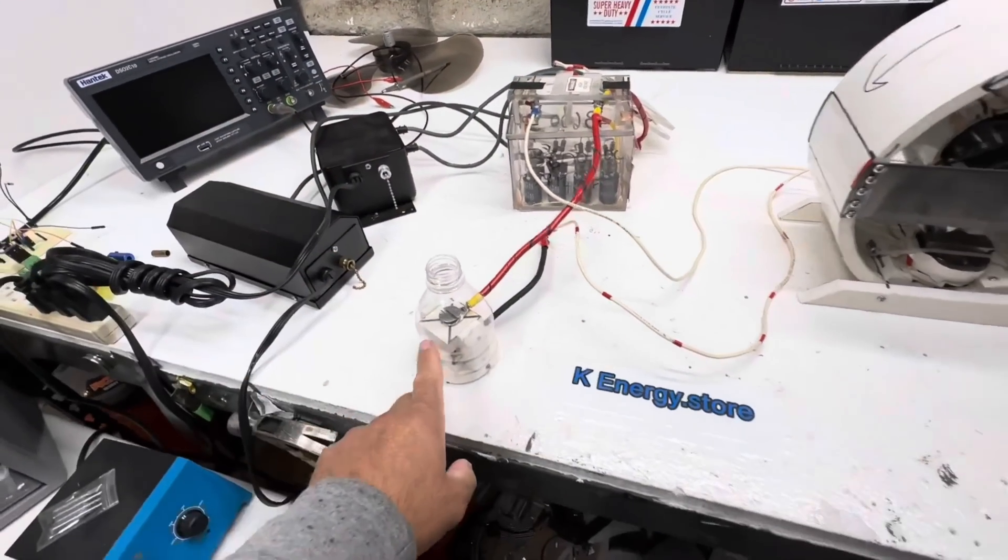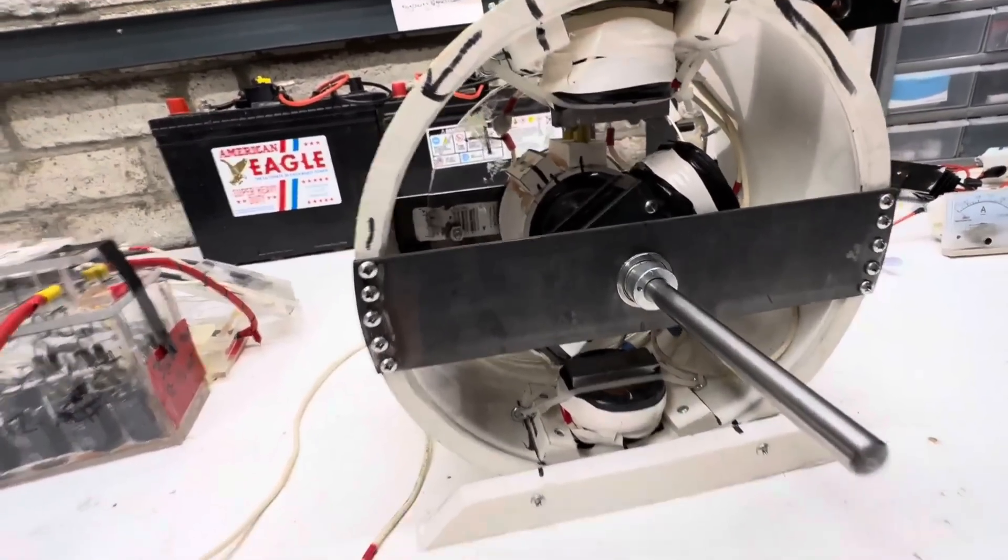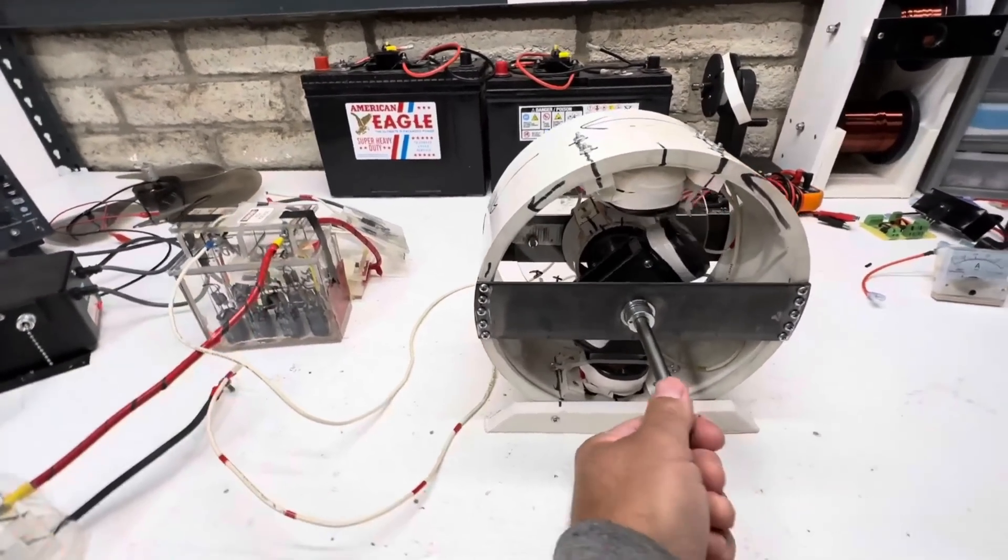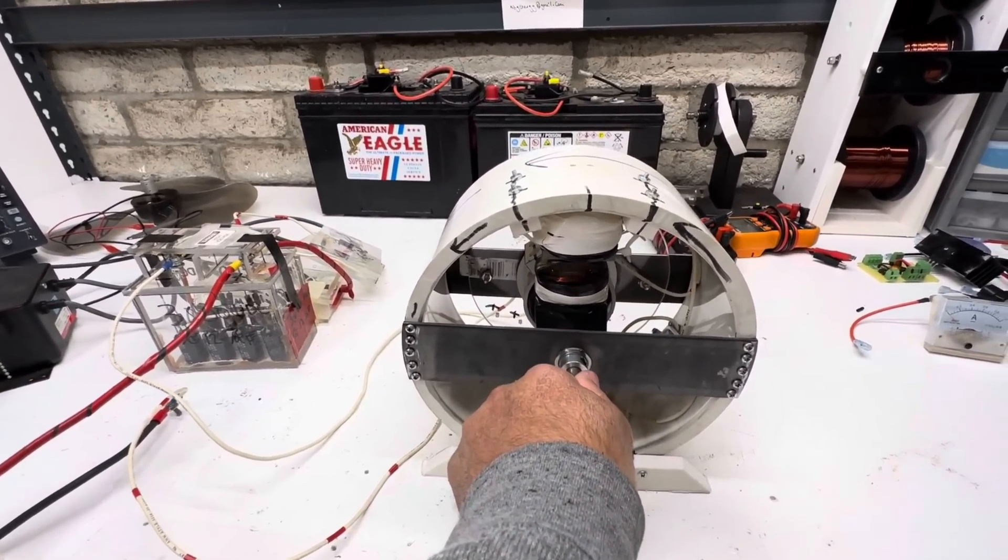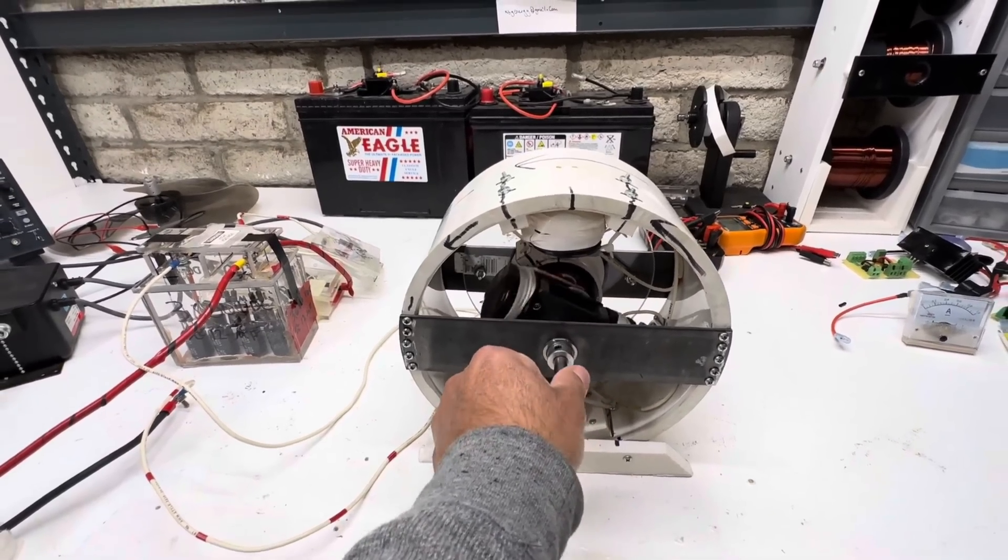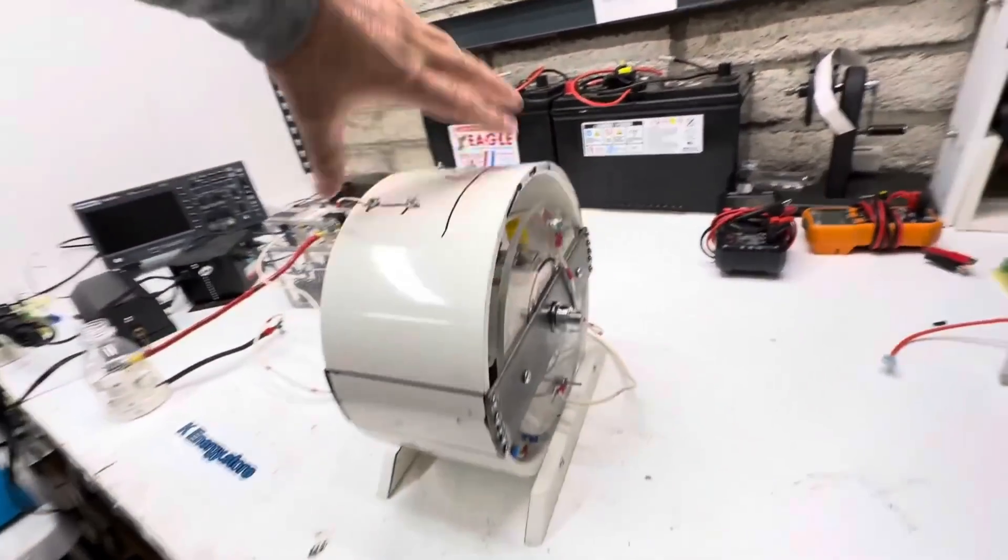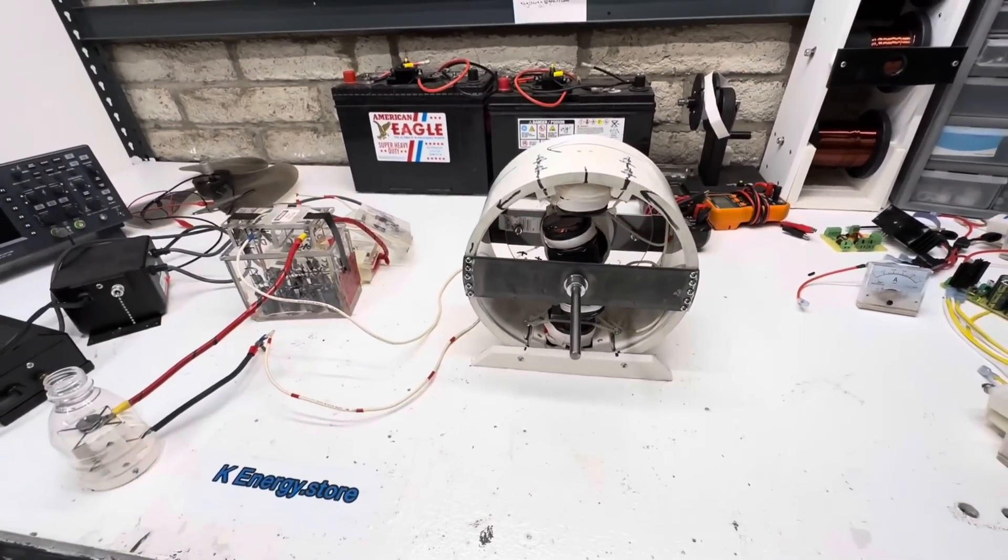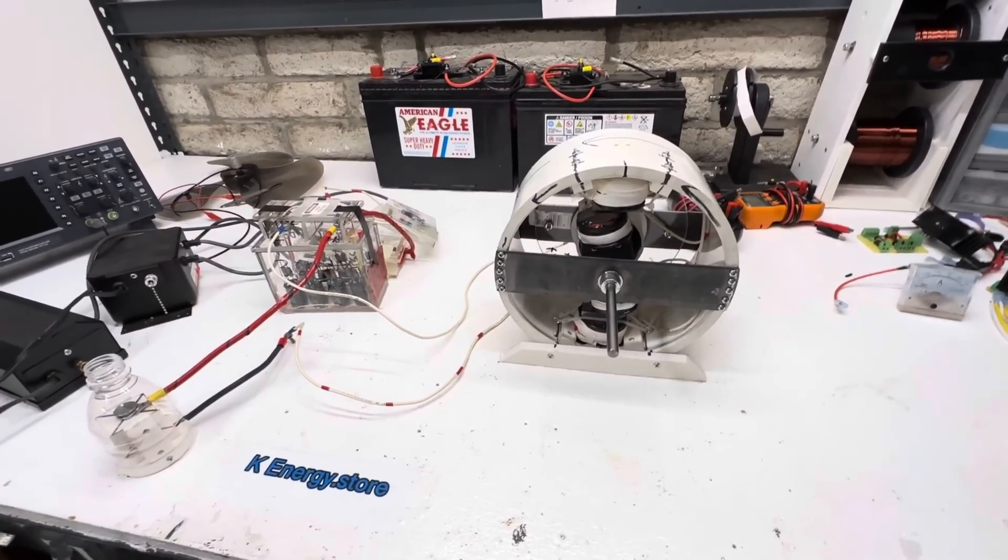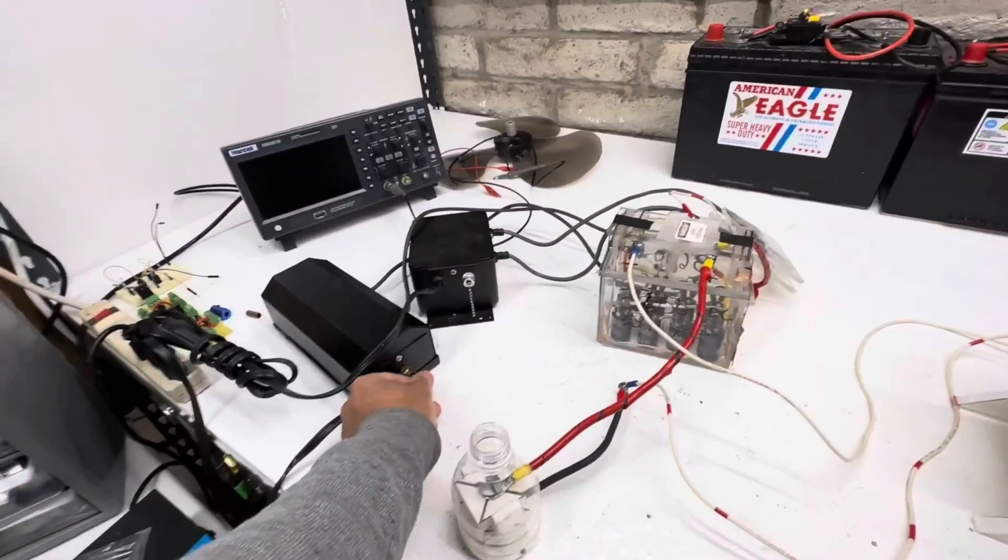The Gray motor was a remarkable feat of engineering, with a compact and elegant design that belied its immense power. The device was capable of producing an output of up to 7,800 volts, with a current that was both stable and consistent. This unprecedented level of energy generation, coupled with the absence of any fuel consumption or emissions, made the Gray motor a game-changer in the world of alternative energy.